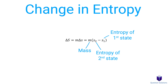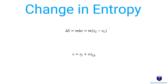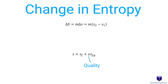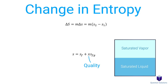If we have to deal with saturated mixtures, then we can use this. Here, x is the quality — that's the ratio of mass of vapor to the total mass of the mixture. So if you have a mixture of saturated vapor and saturated liquid, it tells us the ratio between the two.